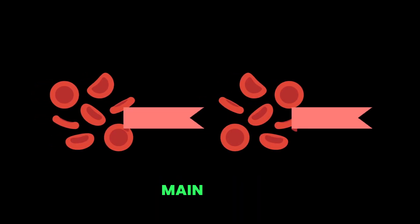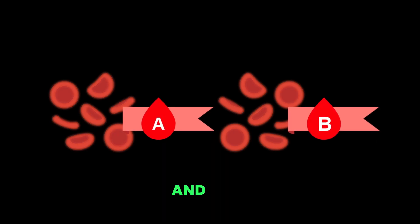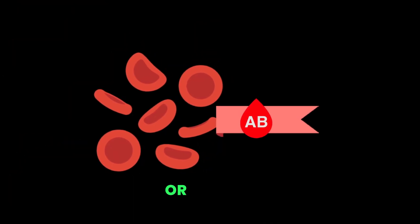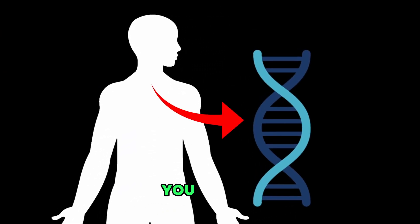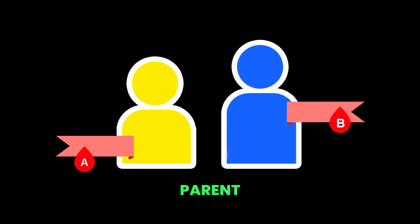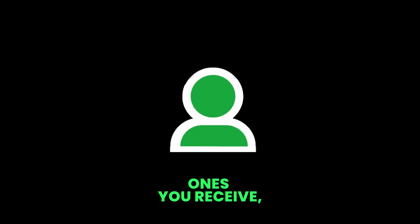Antigens come in two main types, A and B, and they can either be present or absent. But who controls these antigens? It's all thanks to your genetics. You inherit one set of antigens from each parent, and depending on which ones you receive, you end up with a specific blood type.